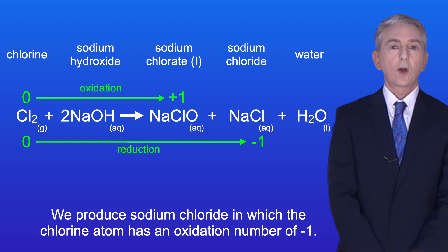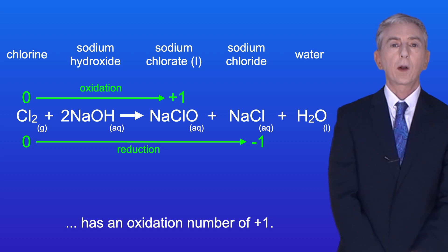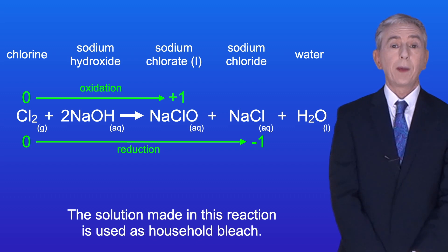We produce sodium chloride in which the chlorine atom has an oxidation number of minus one. We also produce sodium chlorate one in which the chlorine atom has an oxidation number of plus one. Now the chlorate one ion is a powerful oxidizing agent and the solution made in this reaction is used as household bleach.